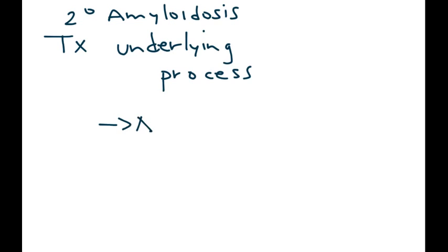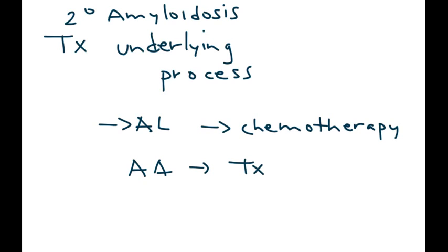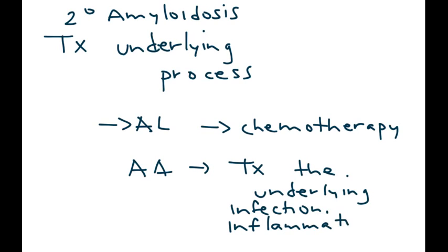In cases of secondary amyloidosis, of course, you want to treat the underlying process. So for example, if it was AL, that would involve chemotherapy because it's an overexpression of those immunoglobulins. If it's AA, it would essentially involve treating the underlying infection, inflammation, or malignancy.